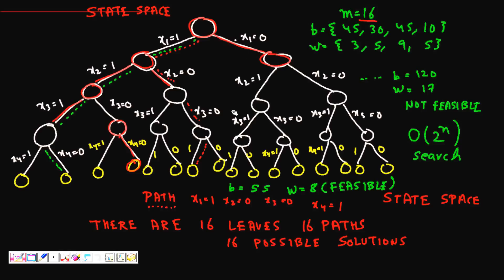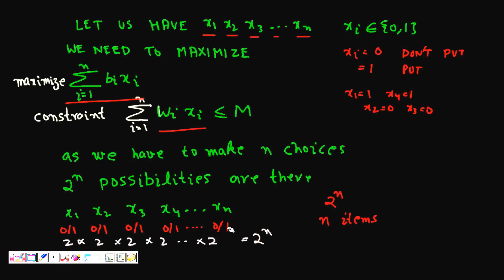This is the state space and I have made it with four levels. Finally, all the leaves represent the possible solutions because when you reach the leaf there is a path. For this one, when I'm at this leaf node, I go to the root via this path: x1 is 1, x2 is 0, x3 is 0, and x4 is 1. It means I'm choosing the first and last item, I'm not choosing second and third. There are 16 leaves. If there are n items there are 2^n possibilities, so four items, 2^4 possibilities equals 16.